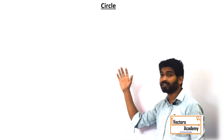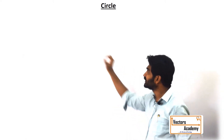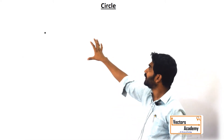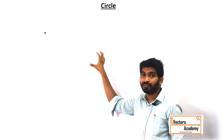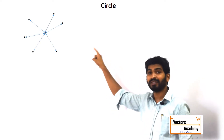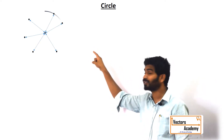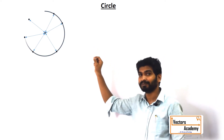Let us revise circles today. A circle is a collection of points which are equidistant from a fixed point, and that fixed point is called the center.